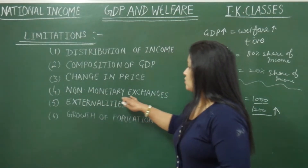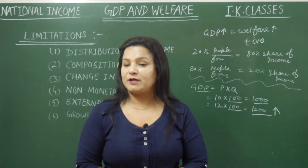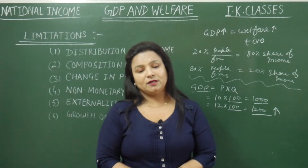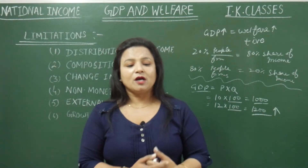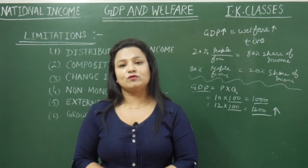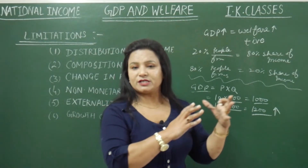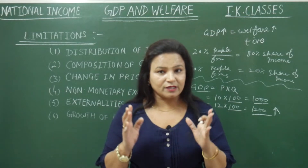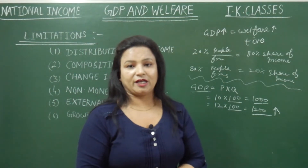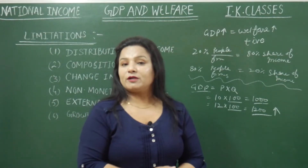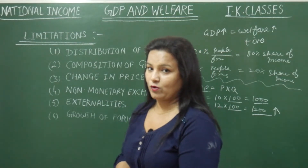The fourth point is non-monetary exchanges. Non-monetary exchanges means things we cannot measure or count in monetary terms — these are not reflected in GDP value. For example, domestic services performed by a housewife: if a housewife works all day, we cannot count that value in GDP. Similarly, if a teacher teaches informally, that is also not counted. So non-monetary exchanges are not properly counted in GDP value, so welfare cannot be properly shown.